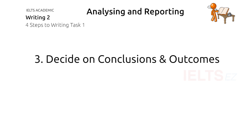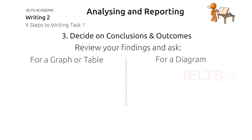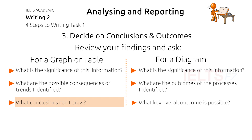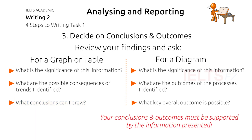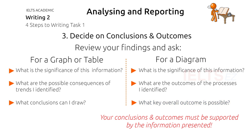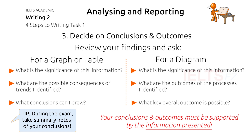Step 3 is vital to achieving a good score in Writing Task 1, but is often done poorly or even completely overlooked by candidates. Your answer must not only include intelligent observations — it should also include a logical conclusion or outcome. To do this, review the summary notes you wrote for step 2. For a graph or table, ask yourself: what is the significance of this information? What are the possible consequences of the trends identified? What important conclusions can I draw? For a diagram, ask: what is the significance of this diagram? What are the outcomes of the processes identified? What is the overall key outcome or purpose? Any conclusions you make must be supported by the facts you've collected. When you've considered these points, write your conclusions or outcomes on the test booklet.